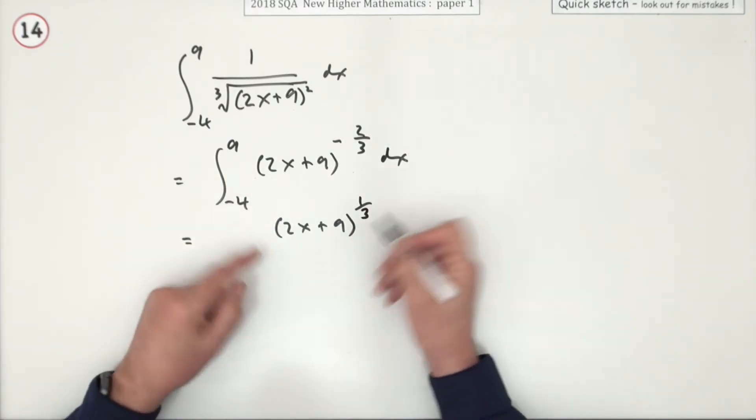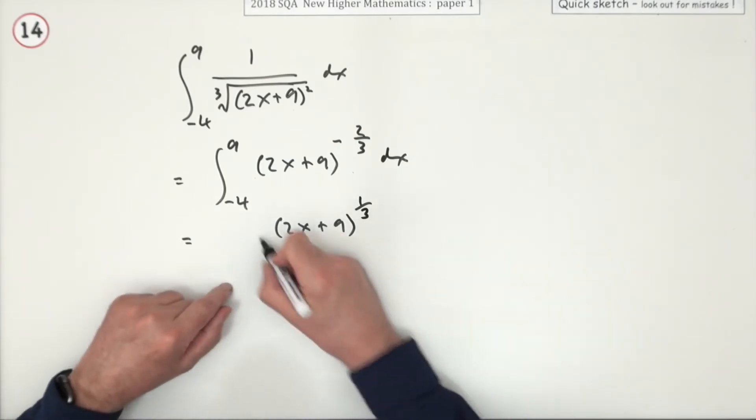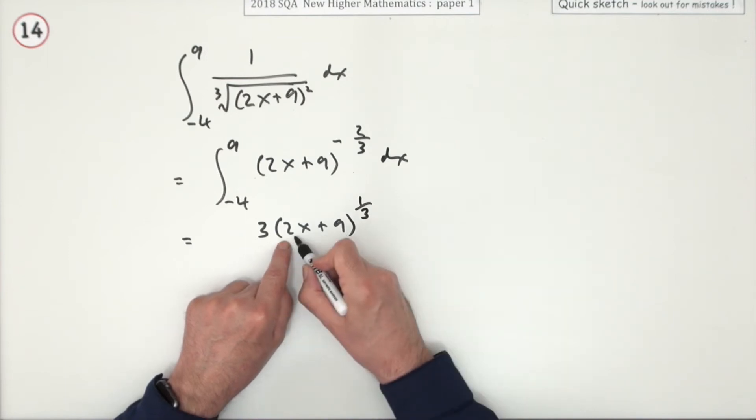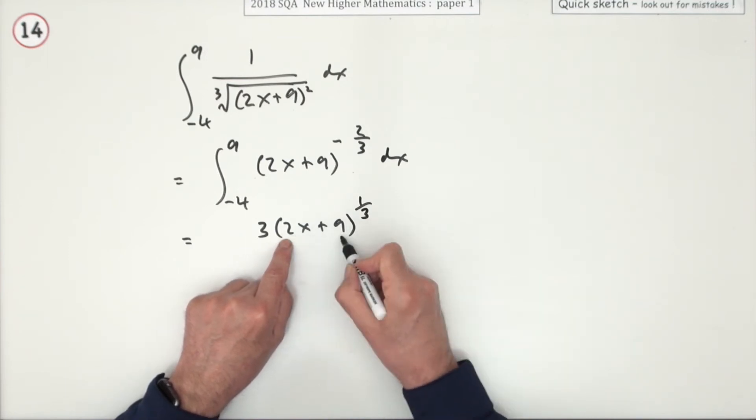Divide by that power. Instead of dividing by a third, what I'm going to do is multiply by 3. But divide by the derivative of the inner one, so don't forget to divide by this 2, the derivative of 2x plus 9.